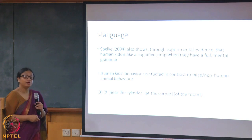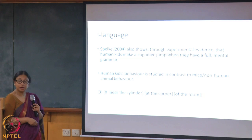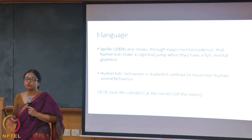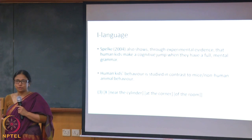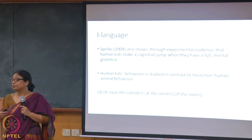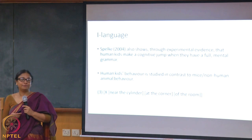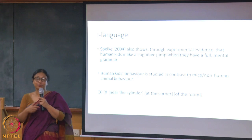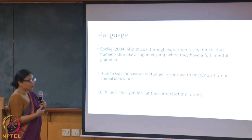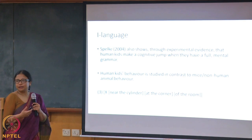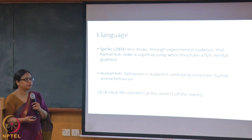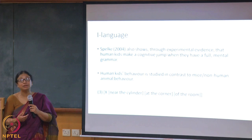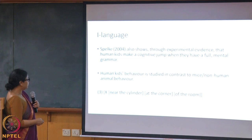There are numerous studies, including Spelke (2004), who showed that with the development of I language, your cognitive skills also develop. You have a cognitive jump when you have the ability to produce larger structures — for example, long sentences or complex embedded structures. For those who know enough linguistics, we call that property recursion. The more recursive structures you have, the higher the cognitive ability.